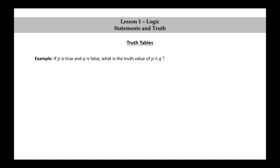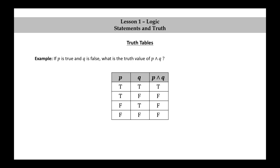Let's look at an example. If P is true and Q is false, what is the truth value of P∧Q? Well, let's just look at the truth table for P∧Q, and in particular the row where P is assigned true and Q is assigned false. We then see that P∧Q is false. P∧Q is equivalent to true and false, which is equivalent to false.